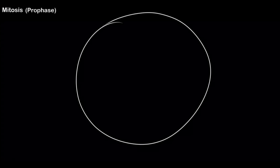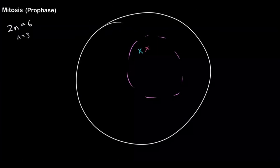Prophase is going to be our first step of mitosis. We're going to see that our nuclear envelope is going to start to disintegrate, shown by dashed purple lines. For our example, our cell has 2n equals 6 — so we have six total chromosomes and n equals 3, meaning three pairs or three sets of chromosomes. I'm going to draw those chromosomes: each chromosome with its homologous pair in a matching color to indicate they're homologous to each other.